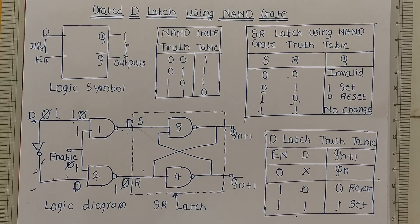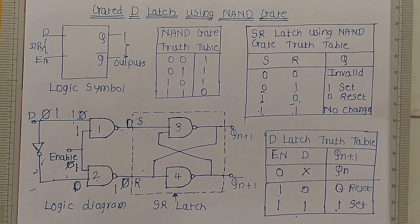We can say that the D latch is a transparent latch. In this way we have completed the D latch truth table.